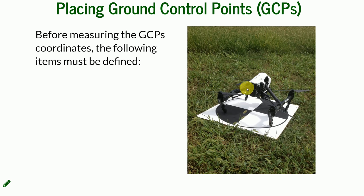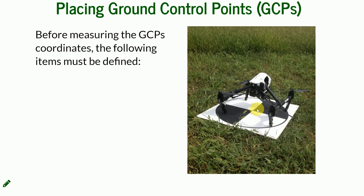This is how a ground control point can look like. If you're looking for suggestions, you can find ready-to-buy panels on the internet. You can also paint them — anything with a recognizable center point that you can measure will do the job. Of course, it also depends on the quality, how many times you want to use it, and how big the target should be, which we'll discuss now.